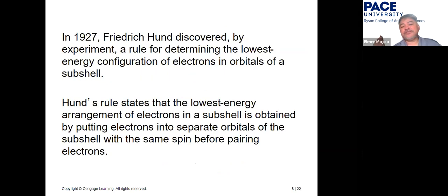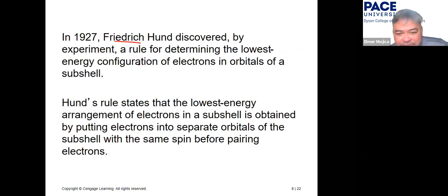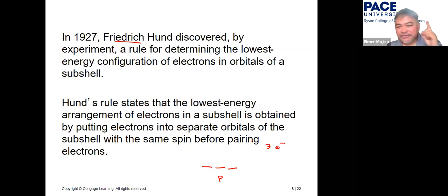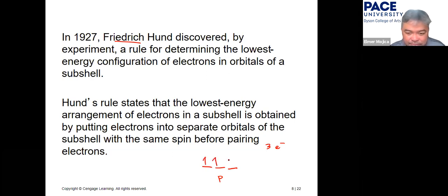In 1927, Friedrich Hund discovered by experiment a rule for determining the lowest energy configuration of electrons in orbitals of a subshell. Hund's rule states that the lowest energy arrangement is obtained by putting electrons into separate orbitals of the subshell with the same spin before pairing electrons.